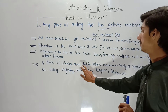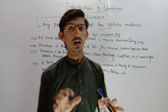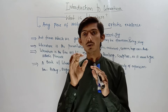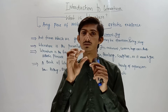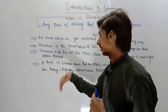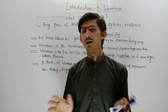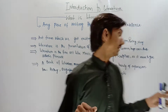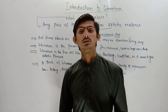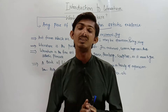A book of literature must have aesthetic excellence — meaning the beauty of expression. A book which has the beauty of expression of thoughts and ideas is literature. Books on history, biography, natural science, religion, or politics that give aesthetic or beauty of expression are also literature. A non-literature book is one that gives only scientific or logical thought, not beauty of thought.